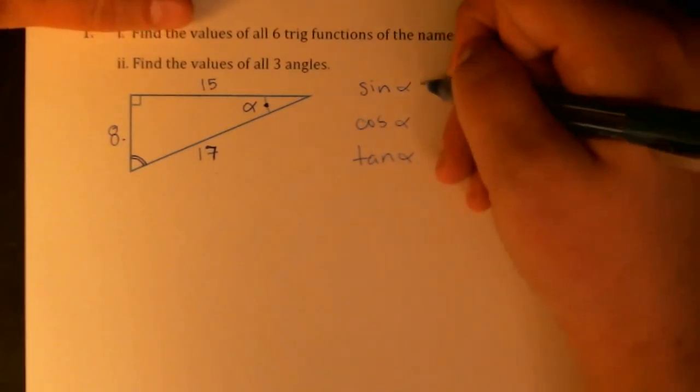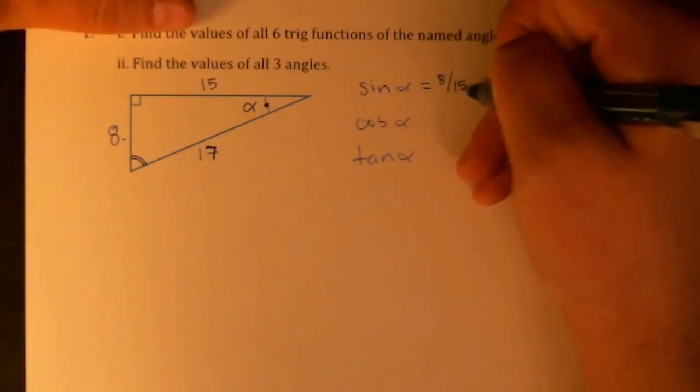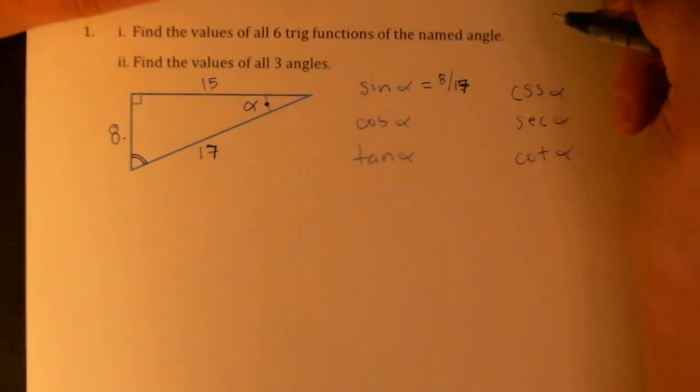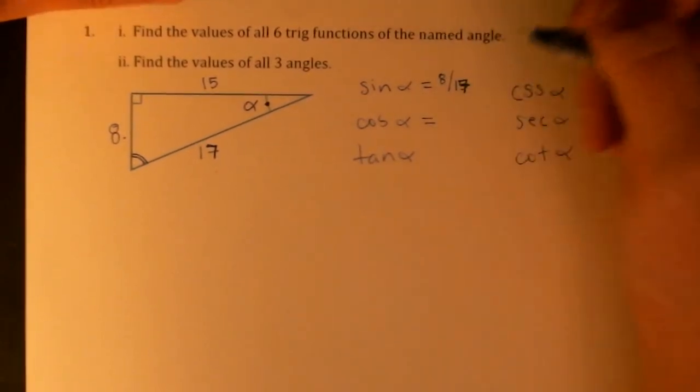So sine of alpha is 8 over 15. Oh, 8 over 17. Sorry, if I can read carefully.